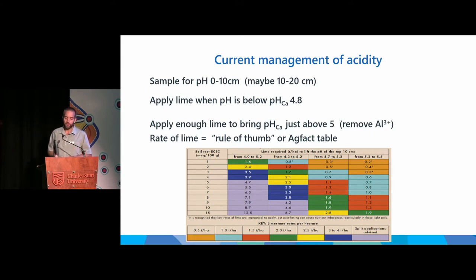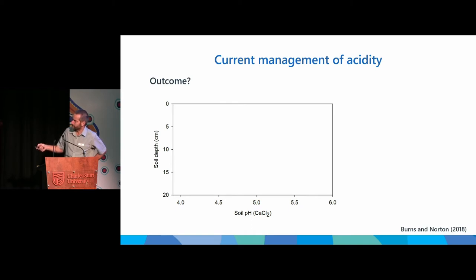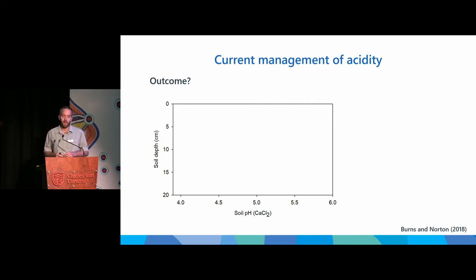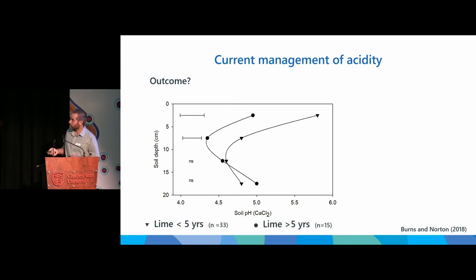Work from Helen Burns and Mark Norton surveyed paddocks from growers producing grain legumes - people who thought they didn't have a soil acidity problem, one of the reasons being that they had a history of liming. When you sample that soil in 5 centimetre intervals, you get what we call stratification of soil pH - these acid subsurface layers, just underneath the top few centimetres. Not subsoil - this is subsurface, just below the top.